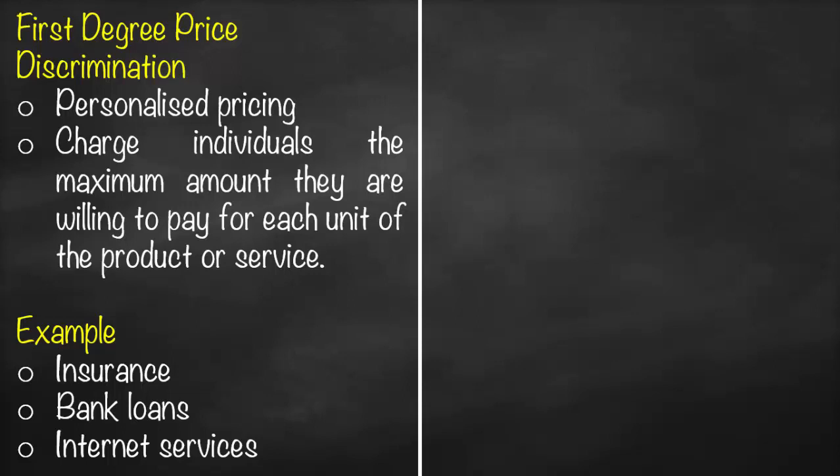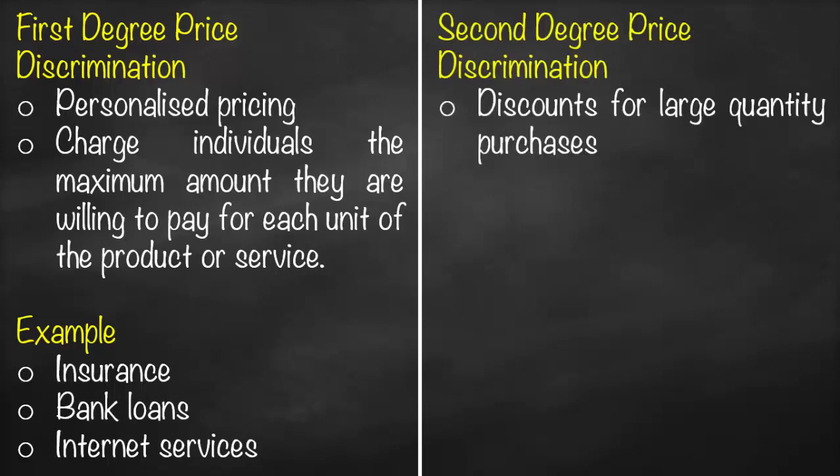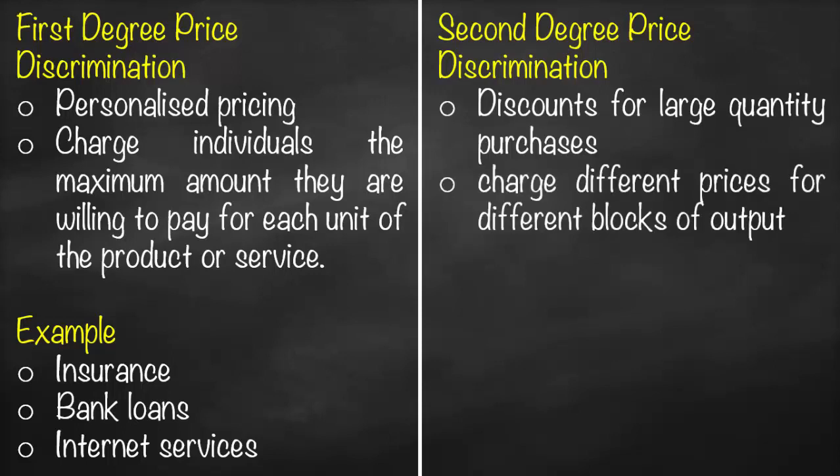The second degree of price discrimination, which means we give discounts for large quantity purchased. So we will charge different prices for different blocks of output. An example of this one is bulk purchasing. Anytime you purchase a large quantity, they will give you a higher discount.